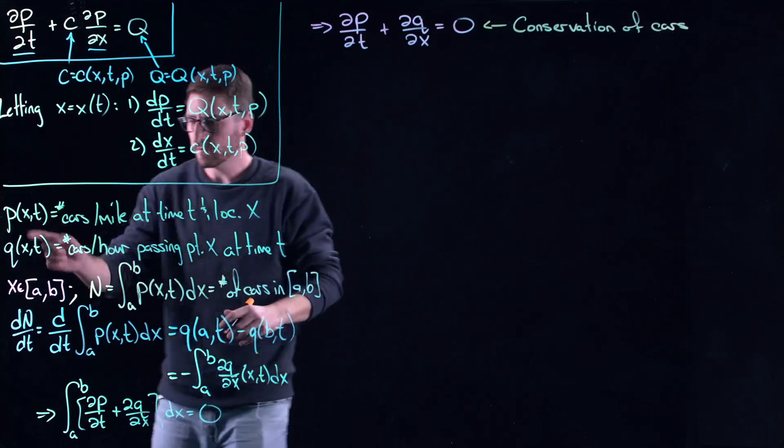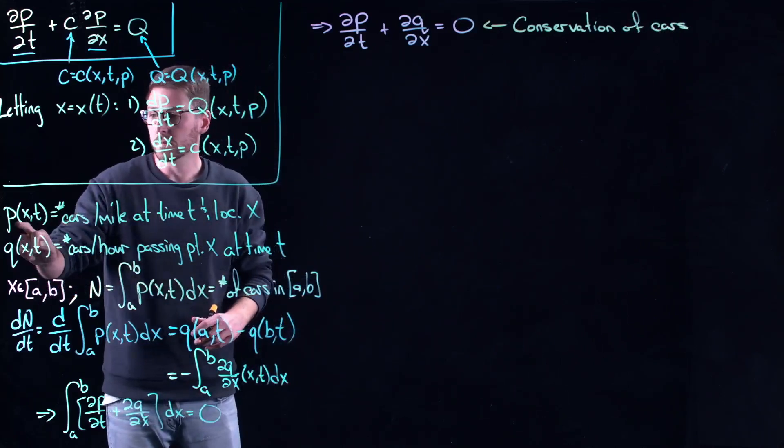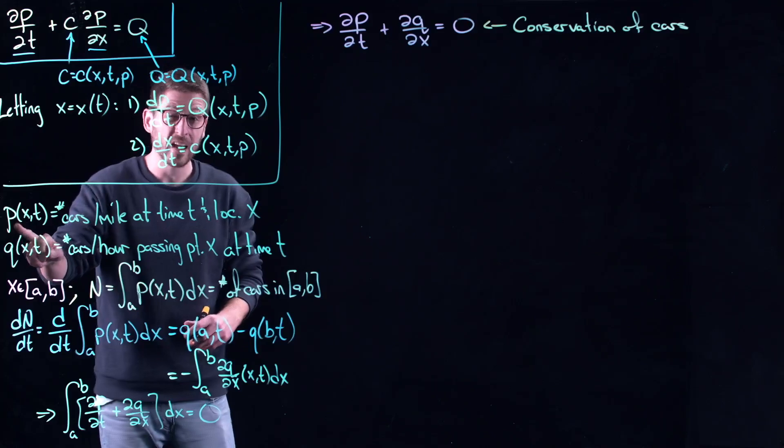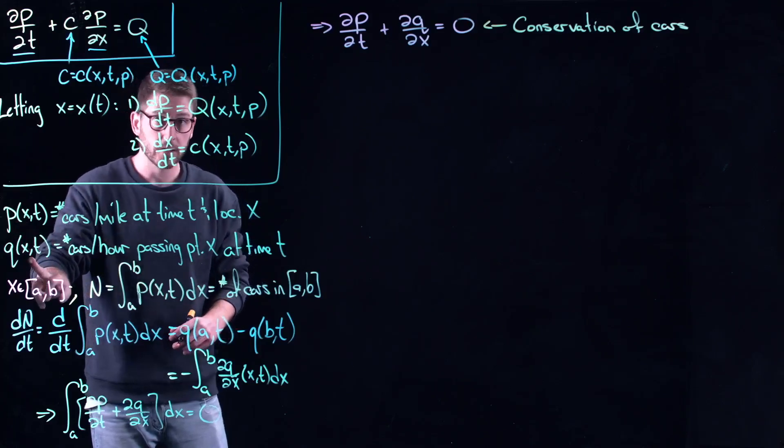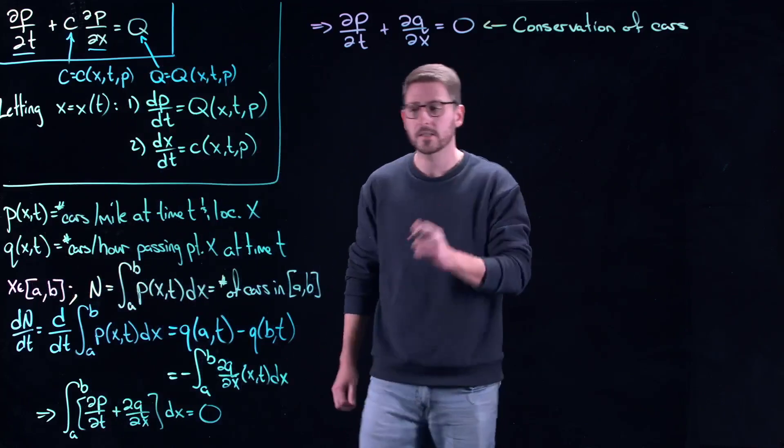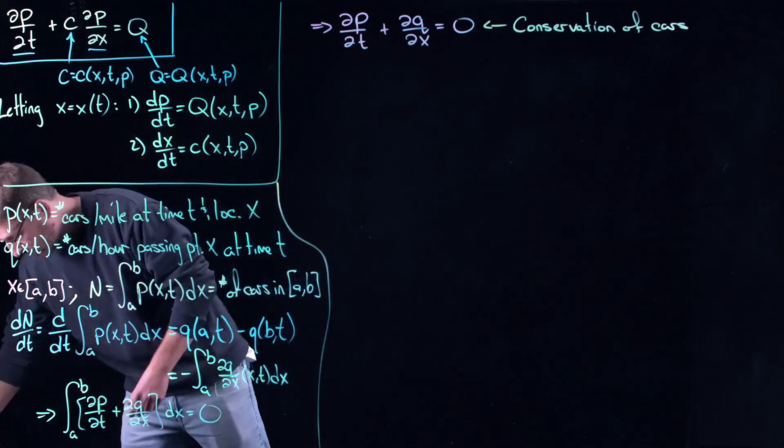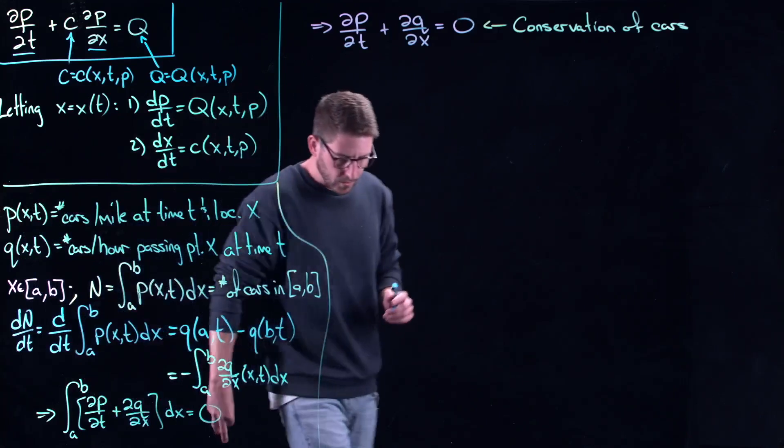This is called conservation of cars. It just comes from the definitions of each one of these things. Differentiating this with respect to time gives you a sort of per hour in it. Differentiating this with respect to space gives you a per mile. So you can play with the units here and try and figure things out as you go, or see that things match up.